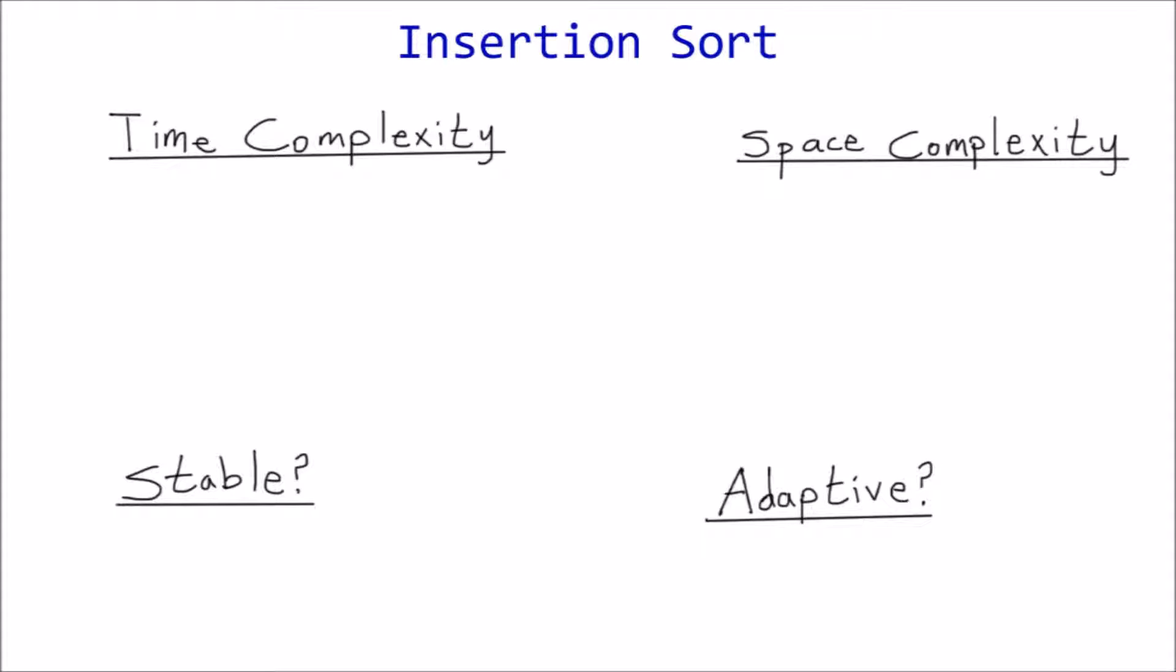I'll structure the analysis around four key properties of sorting algorithms: time complexity, space complexity, stability, and adaptability. Time complexity will take the longest, so we'll save that for last.